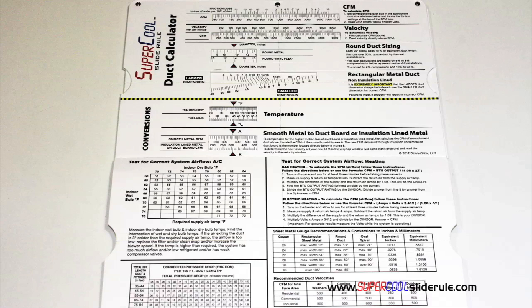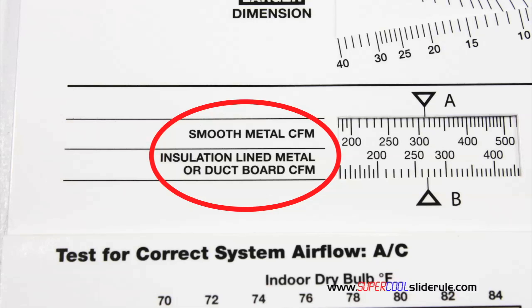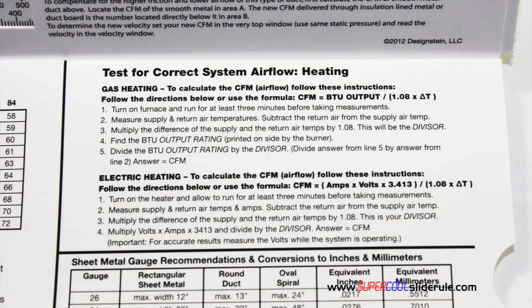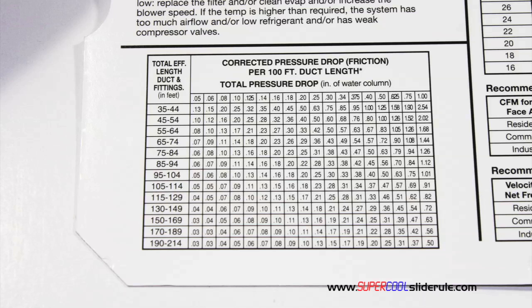Inside is packed with even more information. It performs sizing of both metal and flexible duct. It has the only direct reading conversion from smooth metal to insulation-lined metal we've ever seen. The majority of technicians have never been taught that if the insulation is on the inside of the ductwork, you cannot size it with a regular duct calculator. It has step-by-step directions for determining airflow through a gas furnace, electric furnace, or an air conditioning unit. It has pressure drop multipliers for ductwork, as well as recommended velocities.